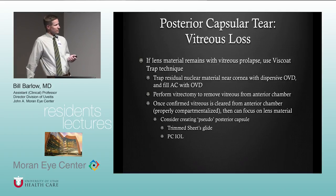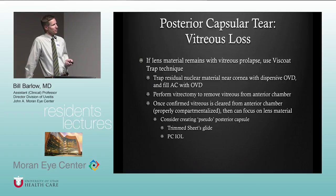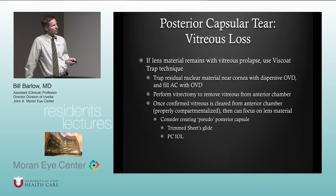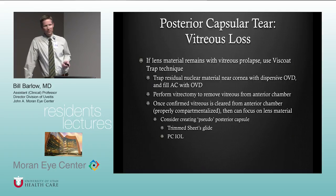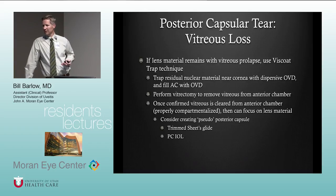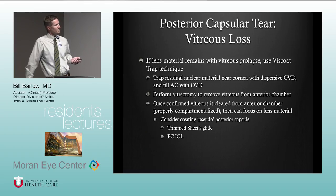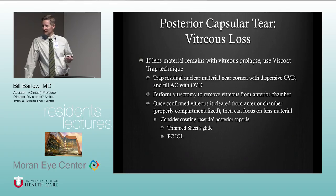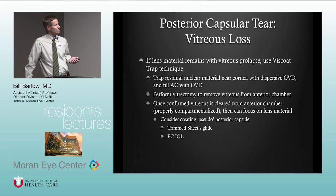For management of lens material with vitreous prolapse, we can use the visco-trap technique: trap the residual nuclear material near the cornea with dispersive viscoelastic, fill the AC with OVD, perform vitrectomy to remove vitreous from the anterior chamber, and replace the OVD removed. Once vitreous is cleared and compartmentalized, focus on the lens material. We can create a pseudo-posterior capsule with a Sheets glide, a posterior chamber IOL placed in the sulcus, or optic capture to prevent vitreous from coming forward again.